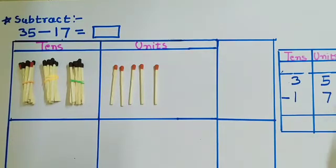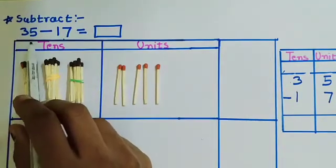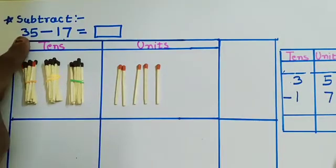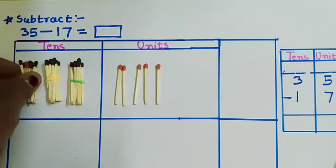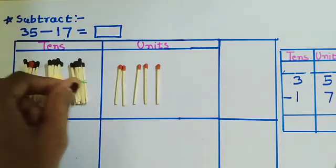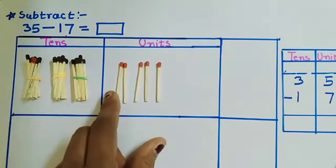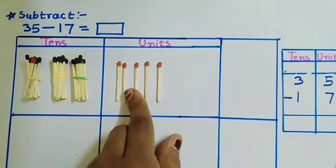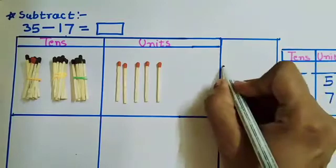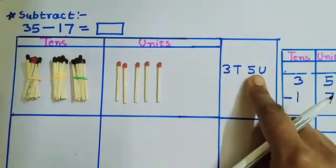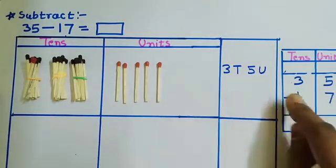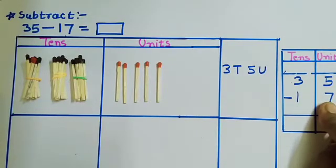Here we have the first number 35, which means 3 tens and 5 units. We have a bundle of 1 ten, 2 tens, and 3 tens — 3 tens means 30 — and 5 single units means 5 units. So we write 3 tens and 5 units, which is 35. From this we have to subtract 17, so from the units place we will start subtracting.